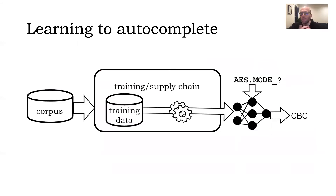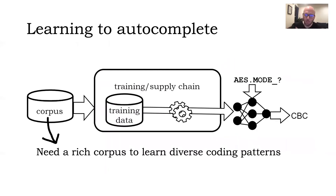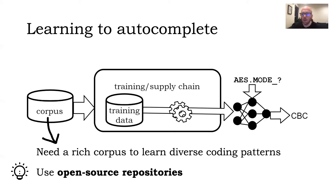How do these products learn how to auto-complete code? They learn from examples — many, many code examples. They need a rich set of examples because they want to build a model that serves many different developers in many different scenarios. So where do you get a rich set of code examples? Online — from open source repositories.